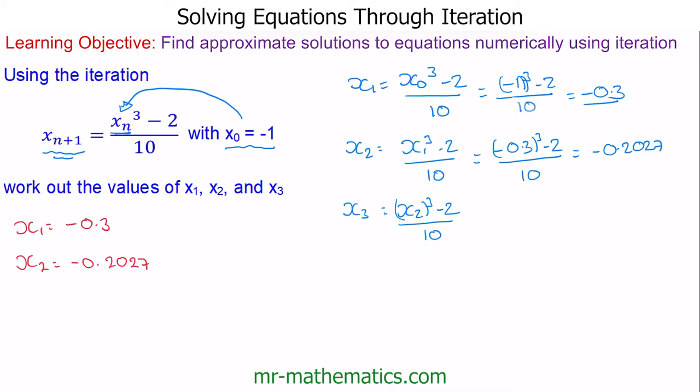Rather than replacing x₂ with these long decimals, we can use the answer function on our scientific calculator. We substitute x₂ with the answer to the previous iteration: (answer)³ - 2 over 10. This answer button will be on your calculator, and this gives us x₃ = -0.20083.